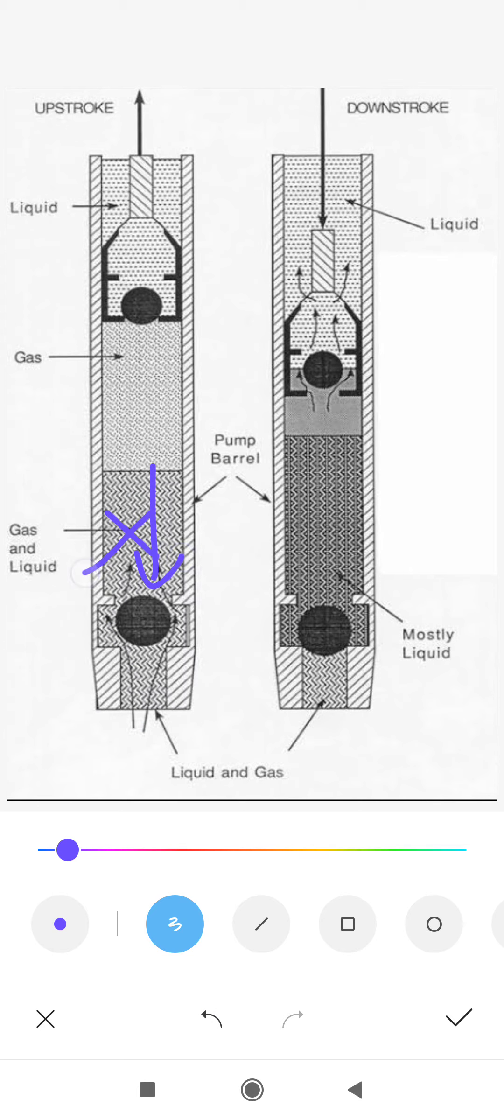The next important part is the plunger that is shown here. This plunger has another ball type valve which is the same as the bottom valve.